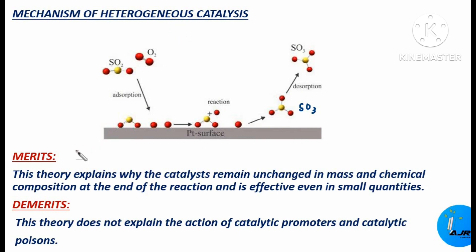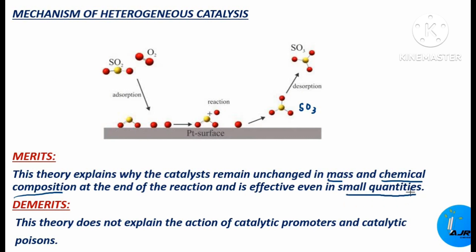Heterogeneous catalysis also has merits as well as demerits. The merits include: this theory explains why the catalyst remains unchanged in mass — the same amount of catalyst used in the beginning is regained back, so there is no change in mass and the chemical composition remains the same till the end of the reaction. It is also effective even in small quantities of catalyst.